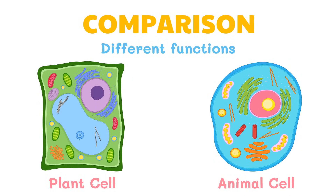Both plant and animal cells contain membrane-bound organelles like the nucleus and mitochondria. However, plant cells and animal cells do not look exactly the same or have all of the same organelles, since each of them have different needs. Plant and animal cells differ because they have to perform different functions.